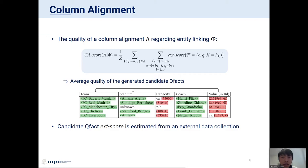We define the quality of a column alignment as the average quality of the candidate QFacts generated from it. For example, in this table, we want to compute the average quality of the candidate QFacts generated by the alignment between team and value, and between stadium and capacity. Here, the quality of a candidate QFact is measured by the external score function. This quality function is computed from an external data collection.